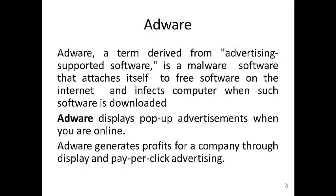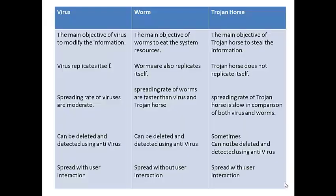Now let me differentiate all the malware types. Virus, worm, and Trojan horse: the main objective of a virus is to modify information — meaning to delete, erase, or corrupt it. The objective of a worm is to eat system resources such as RAM and processor. The main objective of a Trojan horse is to steal information.